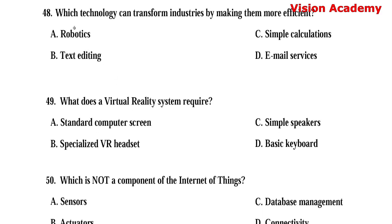Question number 48. Which technology can transform industries by making them more efficient? Option A: Robotics. Option B: Text editing. Option C: Simple calculations. Option D: Email services. Here, option A, robotics, is the right answer.